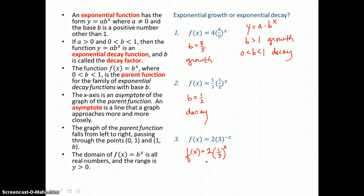So f of x equals 2 times 3 to the negative x power is the same as f of x equals 2 times 1 third to the x power. And now you can see that our b value is 1 third, a fraction between 0 and 1. So this function represents exponential decay.